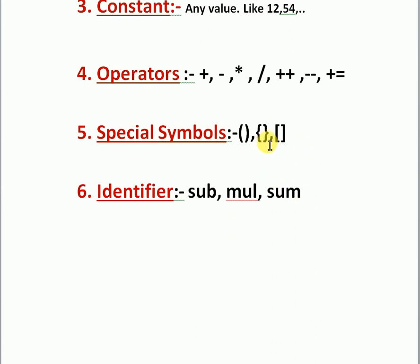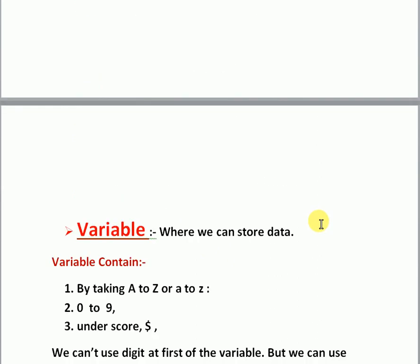Special symbols include first brackets, second brackets, and third brackets. First and second brackets we already used in a simple program in the previous video. Third brackets will be used in the next programming topics. As an identifier example: if the given question is to find the subtraction between two variables, we define a variable 'sub' and then write sub = a - b; similarly mul = a * b; sum = a + b. These are identifiers.